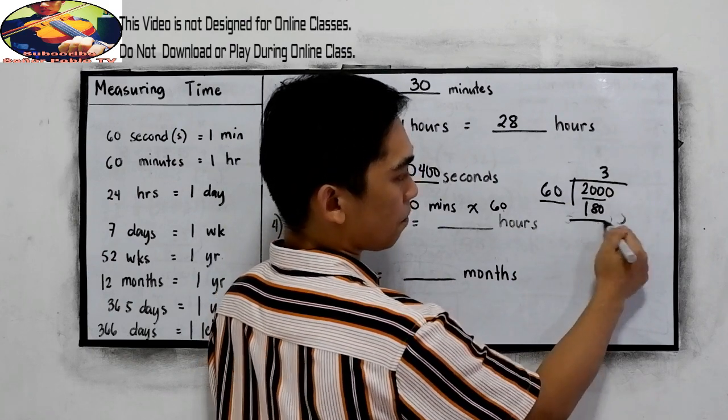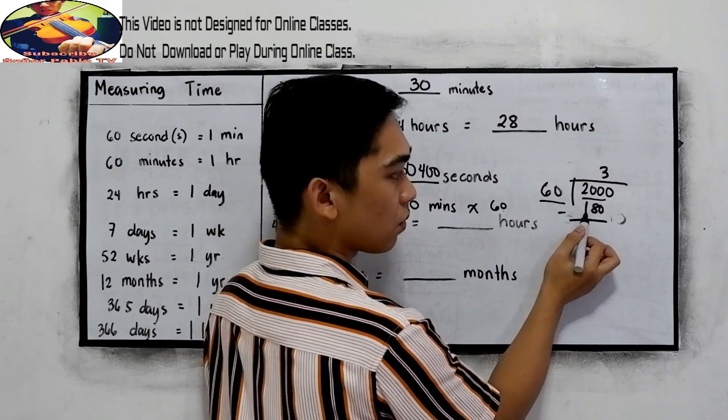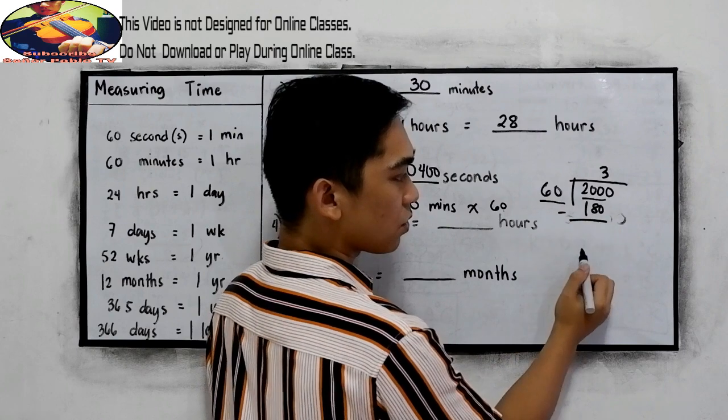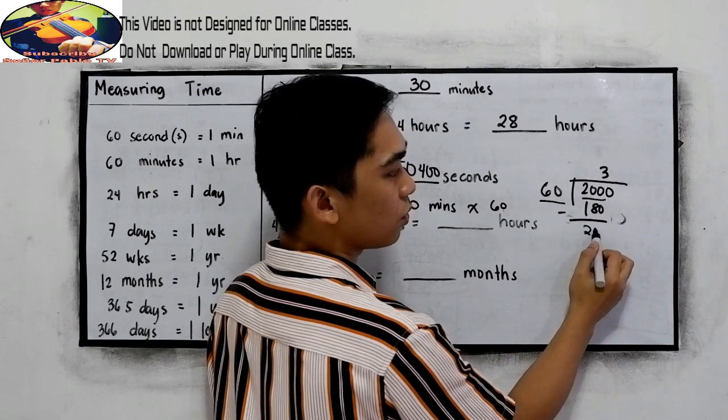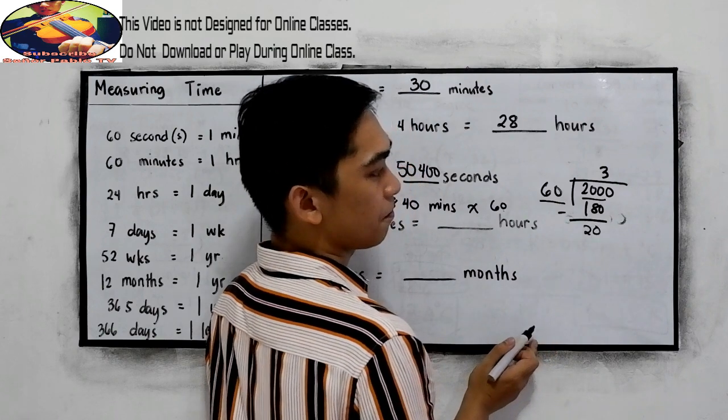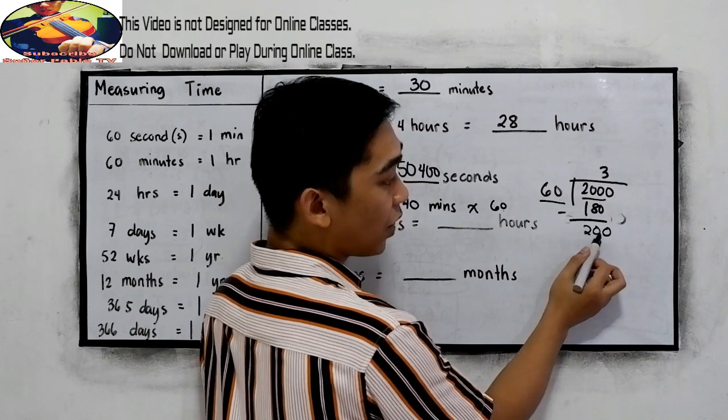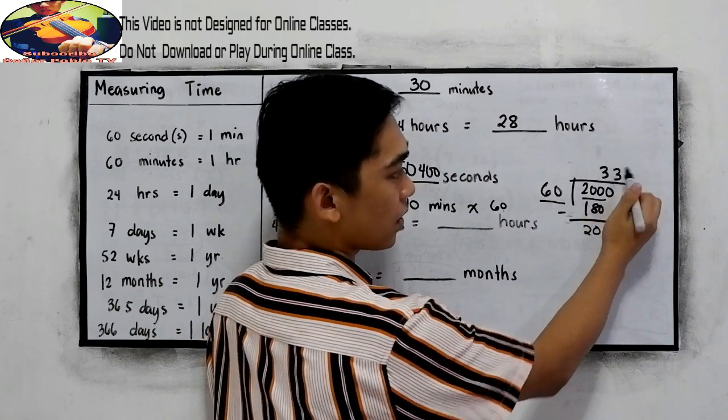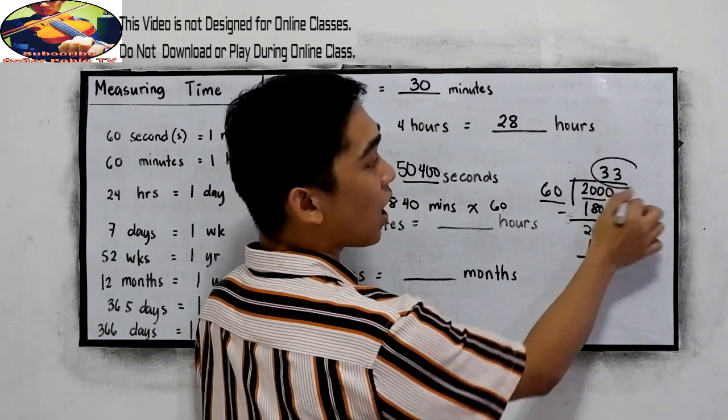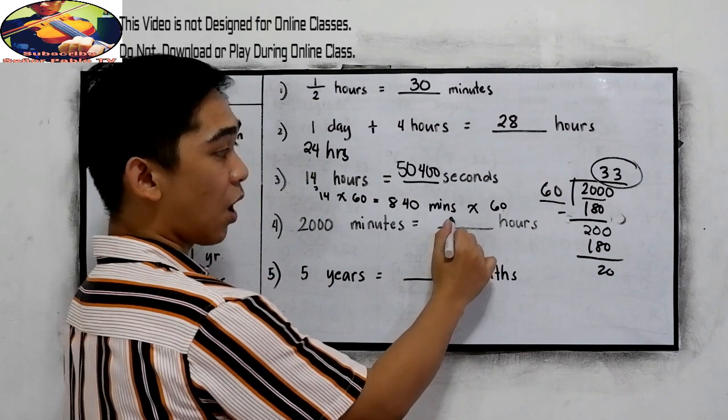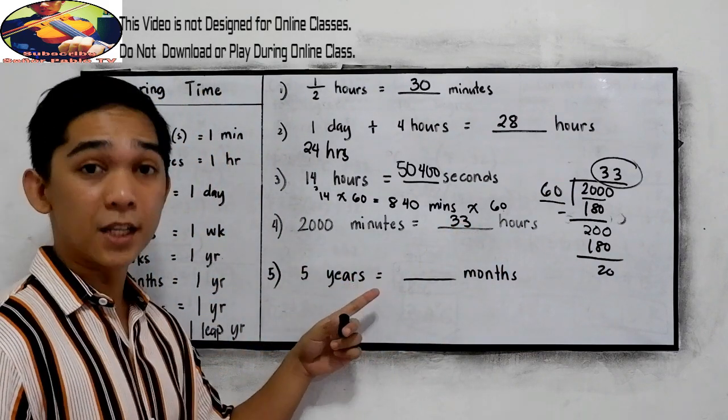Next, we have 180. So drop. 200 minus 180. So we have 2 and 0, 20. Then bring down 0. 200 divided by 60, 3. So 180. So again, 20. So there are approximately 33 hours in 2,000 minutes.